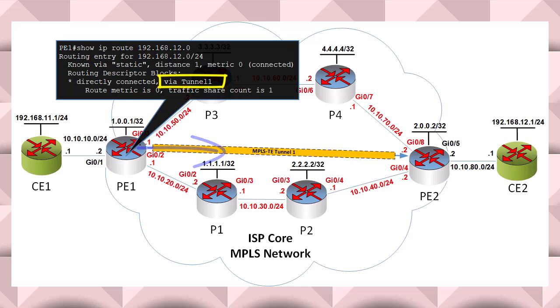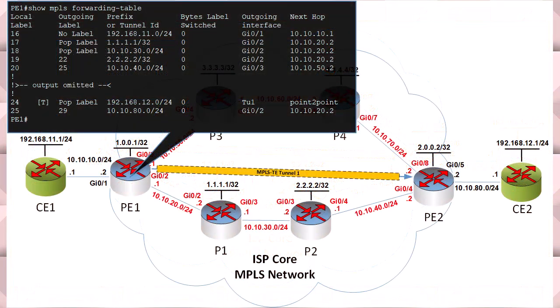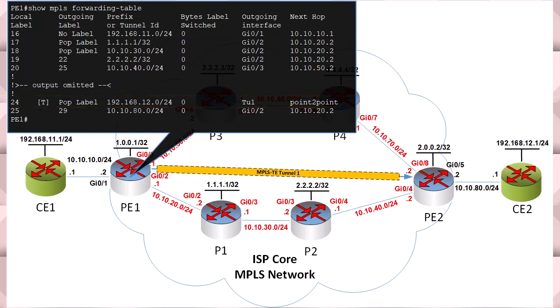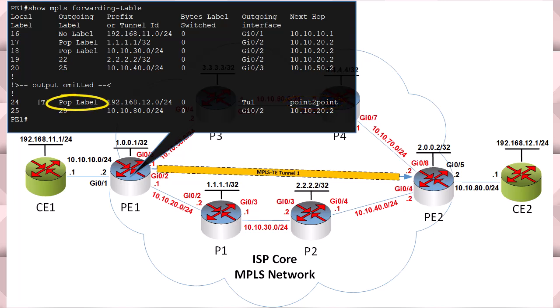Let's take a look at our MPLS forwarding table on PE1. Here we see many different labels that are being shared, but the most important thing to notice is the 192.168.12.0/24 destination. You can see that it has a T there that indicates that for that destination, there is forwarding taking place through an LSP tunnel. You can also see the outgoing tunnel interface, as well as a next hop indicator of point to point. You can also see pop label here, because since we're going directly from one PE router to another, we have penultimate hop popping taking place.